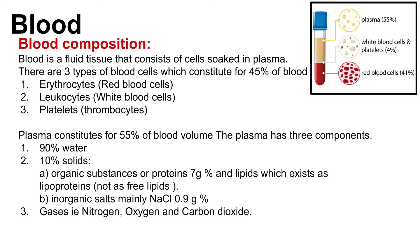The prefix erythro means red, and -cyte means cell. So erythrocyte means red cell. Also note that the prefix leuco means white, and the prefix thrombo means clot.